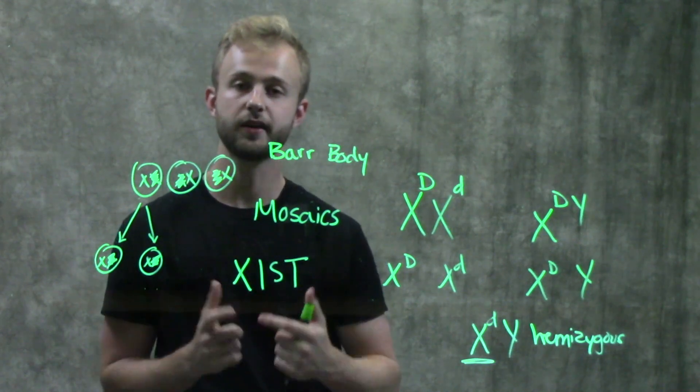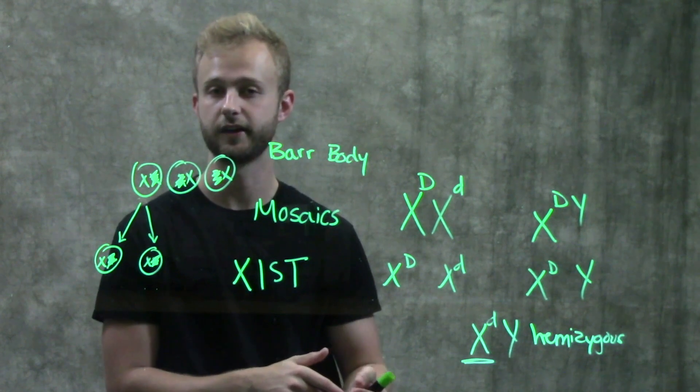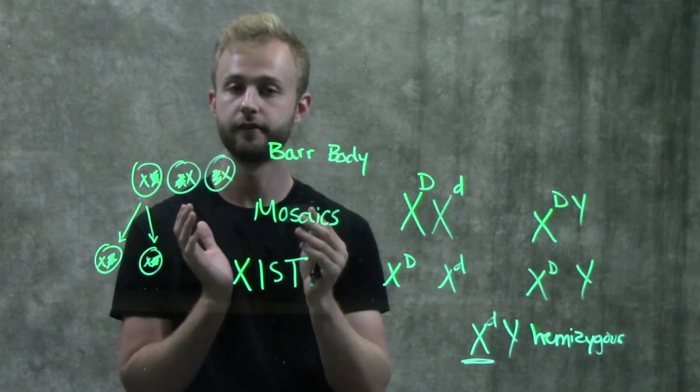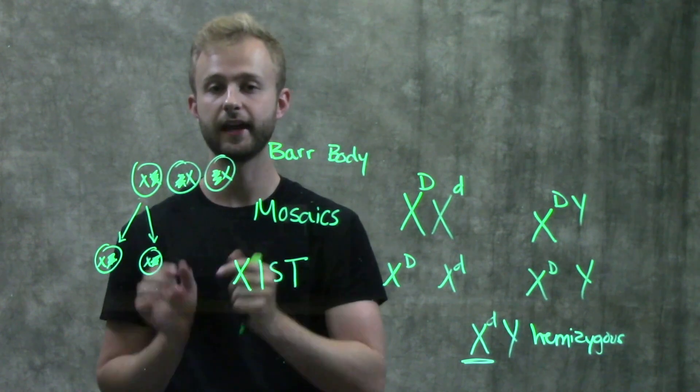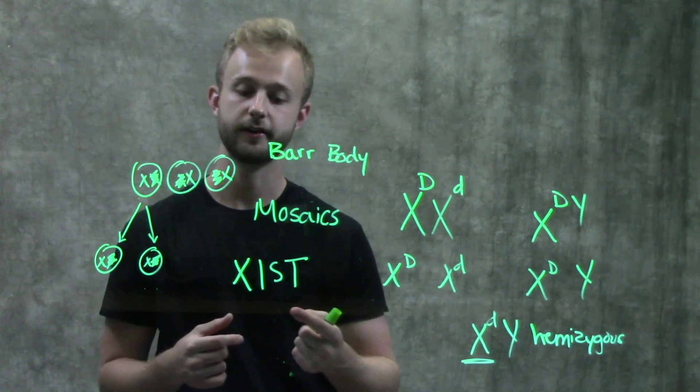And this region will only become active in the chromosome that's going to become inactivated. So just to say that again, the XIST region of the X chromosome will only get activated in the chromosome that is going to be inactivated and turned into the bar body.